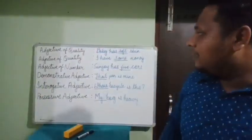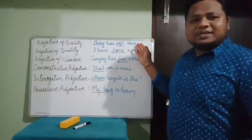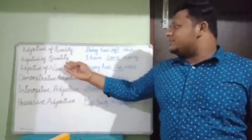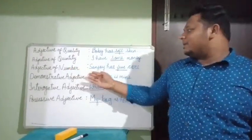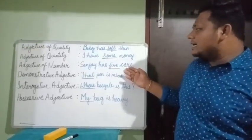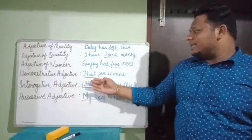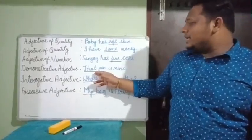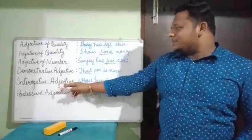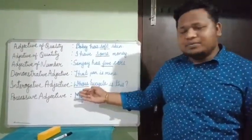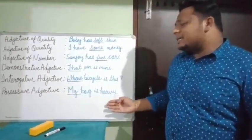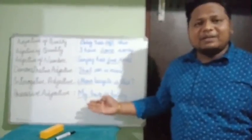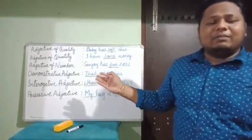Let us recall all types of adjectives with examples. Adjective of quality: Baby has soft skin — 'soft' is the quality of skin. Adjective of quantity: I have some money — 'some' is the quantity of money. Adjective of numbers: Sanjay has 5 cars — '5' is the number of cars. Demonstrative adjective: That pen is mine — 'that' is pointing out the pen. Interrogative adjective: Whose bicycle is this? — 'whose' is the interrogative adjective, used before 'bicycle'. Possessive adjective: My bag is heavy — 'my' shows ownership of the bag.